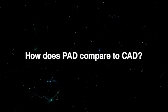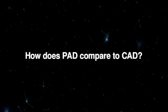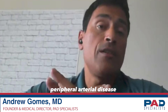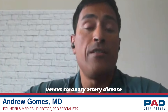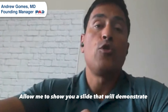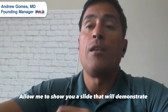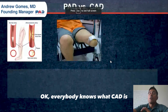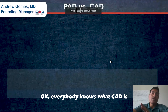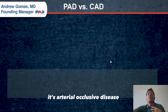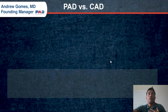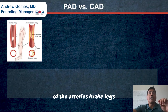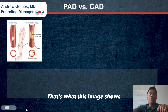How does PAD compare to CAD? Peripheral arterial disease versus coronary artery disease. Allow me to show you a slide that will demonstrate the similarities and differences between the disease process. Everybody knows what CAD is — it's arterial occlusive disease of the arteries in the heart. PAD is the same process: atherosclerotic occlusive disease of the arteries in the legs. That's what this image shows.